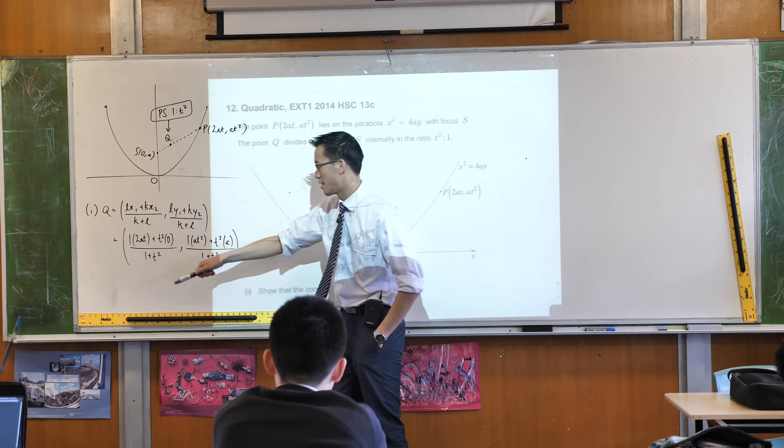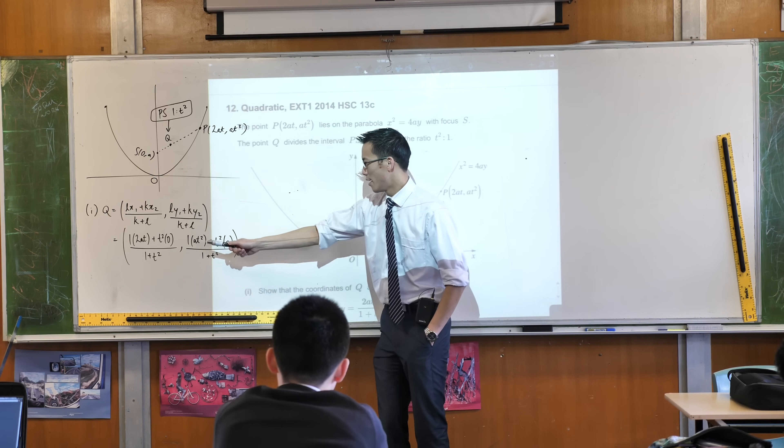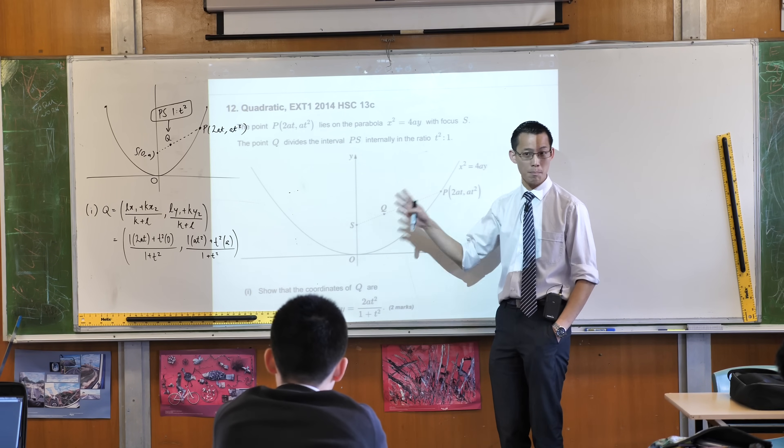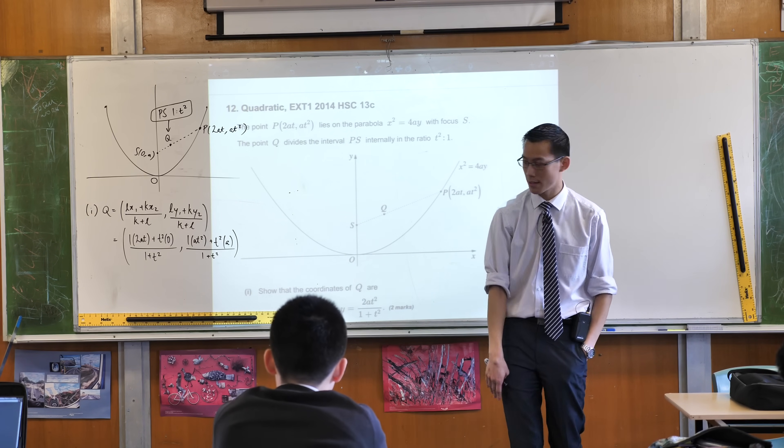So you can see my substitution there. Once you've evaluated you get your 2at there plus zero, at squared plus at squared, and that gives you the 2at squared that you need. So part one falls out quite nicely.